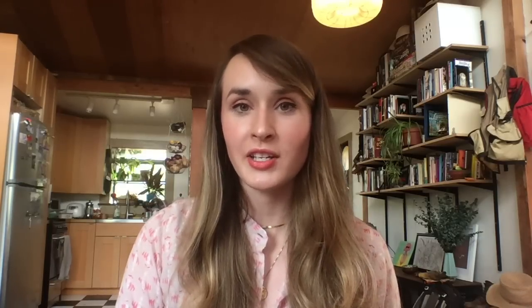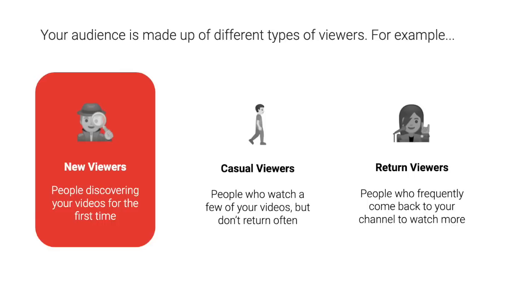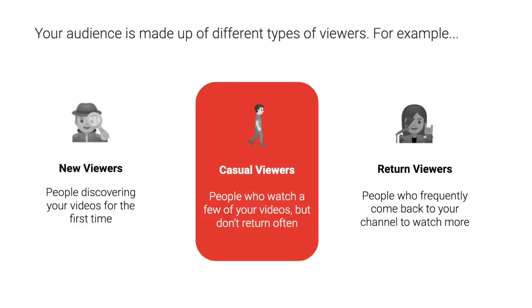Let's start off with some of the different types of viewers that are going to be on your channel at any given time. Firstly, you have new viewers — people discovering you and your channel for the very first time. Then you have casual viewers, who might watch one or two of your videos and either don't return at all, or come back fairly infrequently. Then lastly you have return viewers — people who watch you regularly or consistently, there for every new upload. This is closer to a type of fan. On average, viewers watch 200 plus channels per month, and it is a very competitive space. It's common to have less than 10% of the viewers on your channel watching you more than any other channel on YouTube.